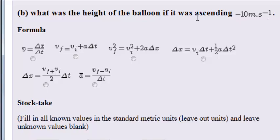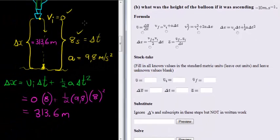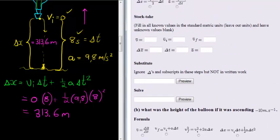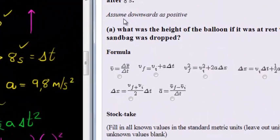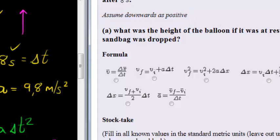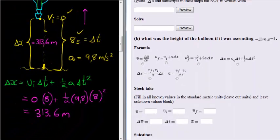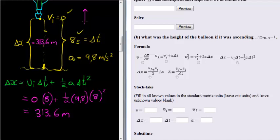If it was ascending, it means it was going upwards, which obviously means that upwards is in the negative direction, since according to the question, we assume downwards is positive, and therefore, the initial velocity is negative.